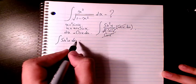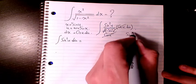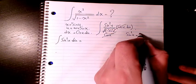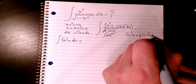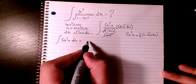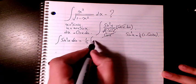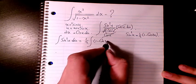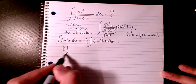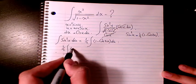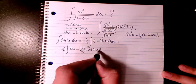Then I can use the identity that sine squared u equals 1 over 2 times (1 minus cosine 2u) du. So I can write the same thing here: 1 over 2 times (1 minus cosine 2u) du, which gives 1 over 2 du minus 1 over 2 cosine 2u du.